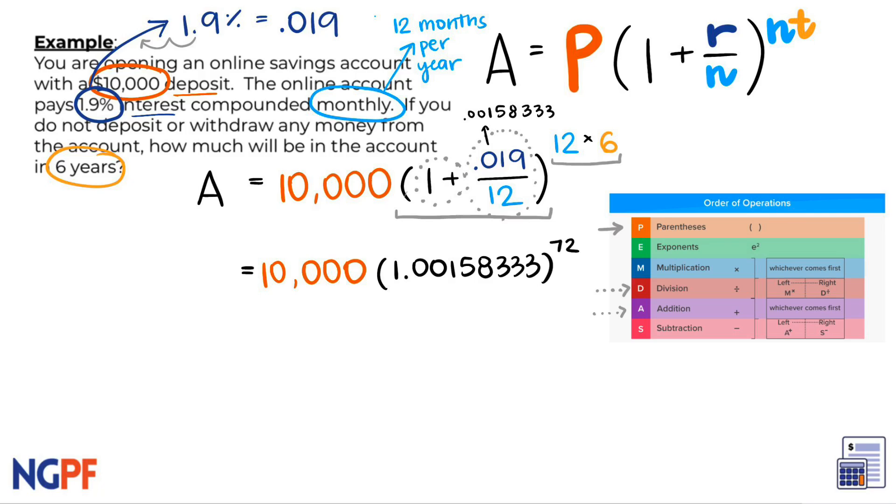Our complicated formula is now a little less complicated now that we only have two more operations to carry out, multiplication and exponents. Following order of operations, we must first carry out the exponent, so we can drop and keep the 10,000 once more. Then take 1.00158333 to the 72nd power. This gives us 1.12065108.